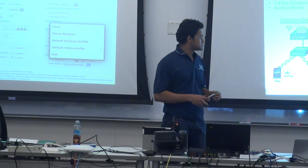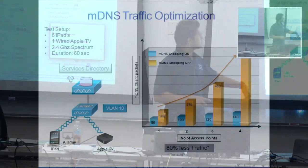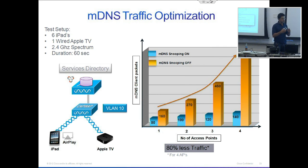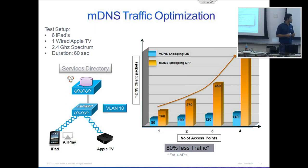In our test: six iPads, one Apple TV, all in the same subnet, on the 2.4 GHz spectrum, with all iPads turned on for 60 seconds to measure the traffic. The orange bar is without the MDNS feature, and the blue one is with this feature turned on. With just four APs, we see almost an 80% reduction in MDNS traffic over the air.